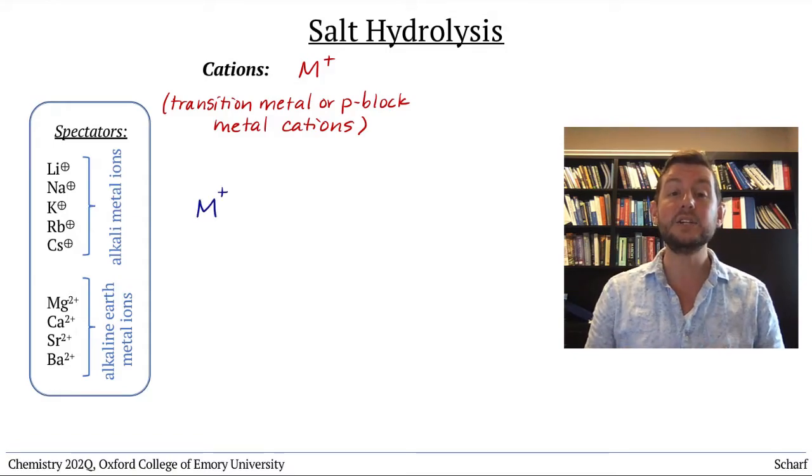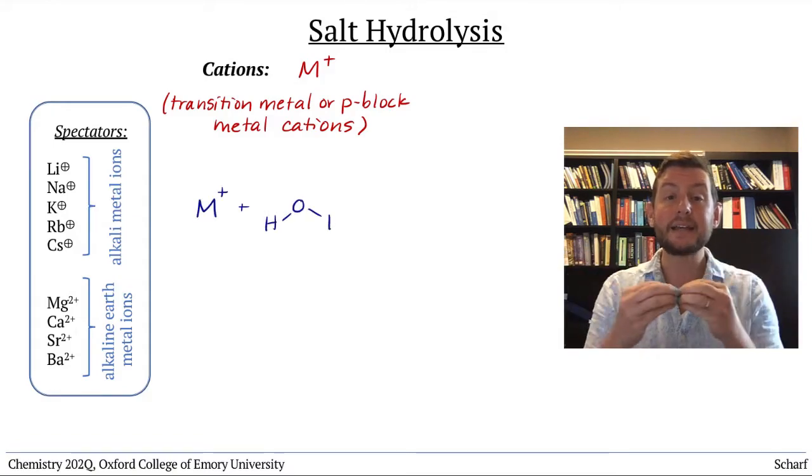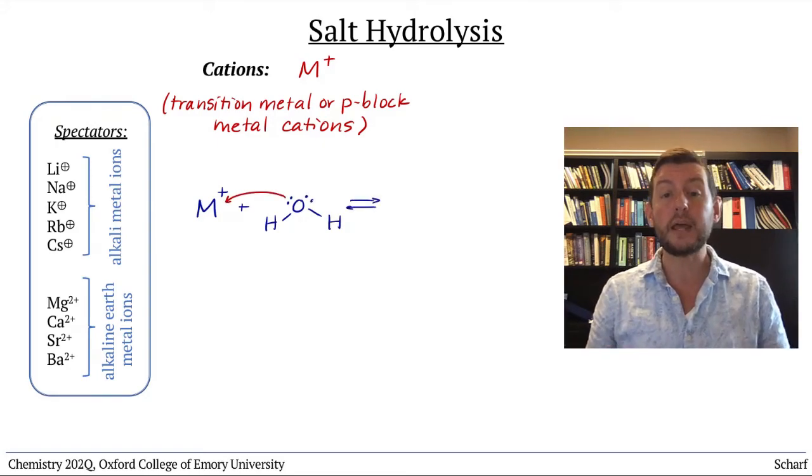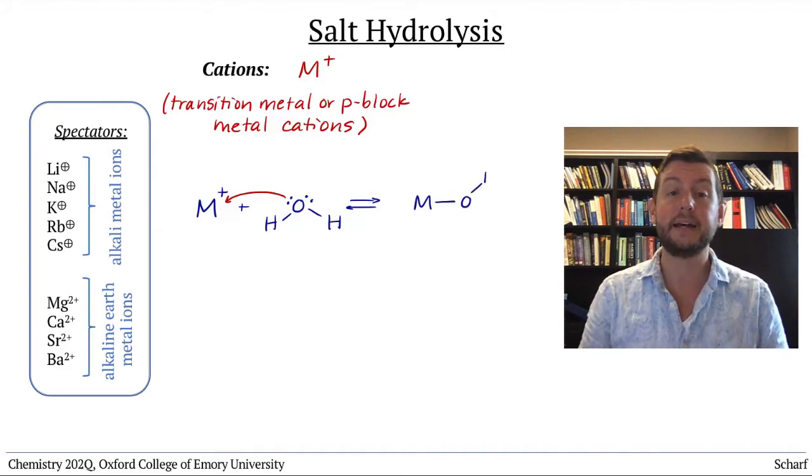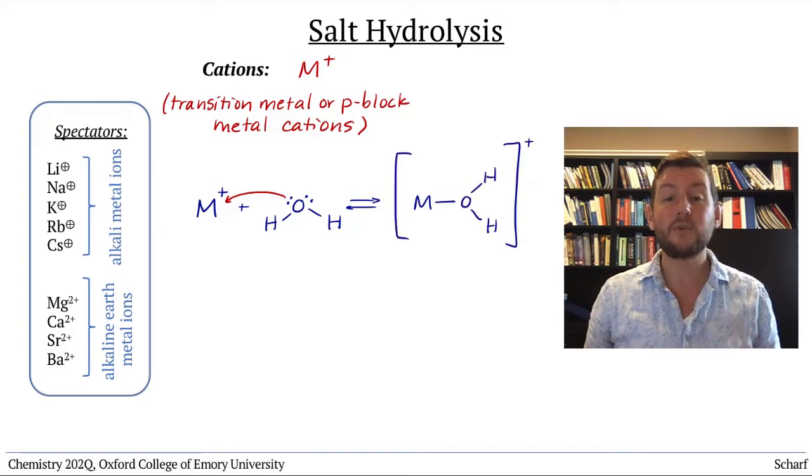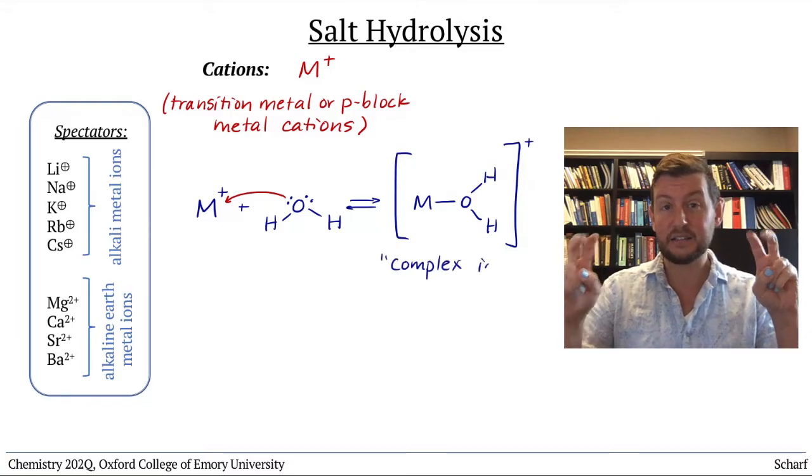Instead, they initially react as Lewis acids with water. Water molecules can donate a lone pair to a metal cation, forming a covalent bond. In this way, they form complex ions with water.